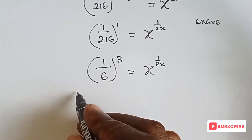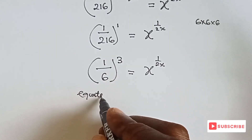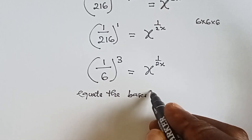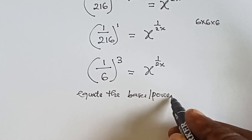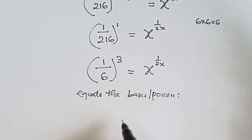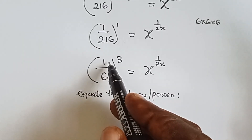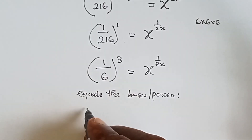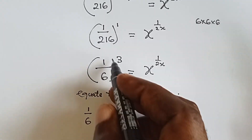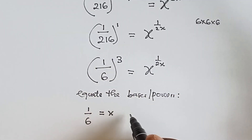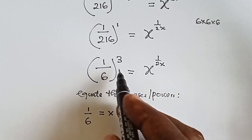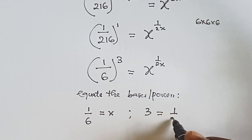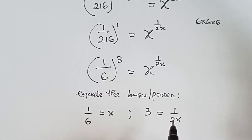From here we can equate both the bases and the powers. Let's equate the bases and also the powers and see what we have. If we equate the bases, it means 1 over 6 equals x. And when we equate the powers, we have 3 equals 1 over 2x.